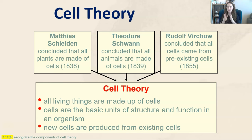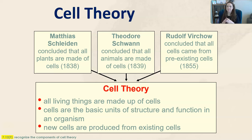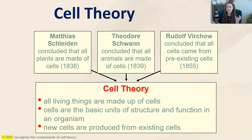I want to pause and clarify something important: do not confuse cells with atoms. In a previous unit you learned that all matter is made up of atoms, and atoms are the basic units of all matter. This is very different — we're talking about living or once-living things. All living or once-living things are made up of cells. Both cells and atoms have a nucleus, but it's important to differentiate cells with living things and atoms with matter.